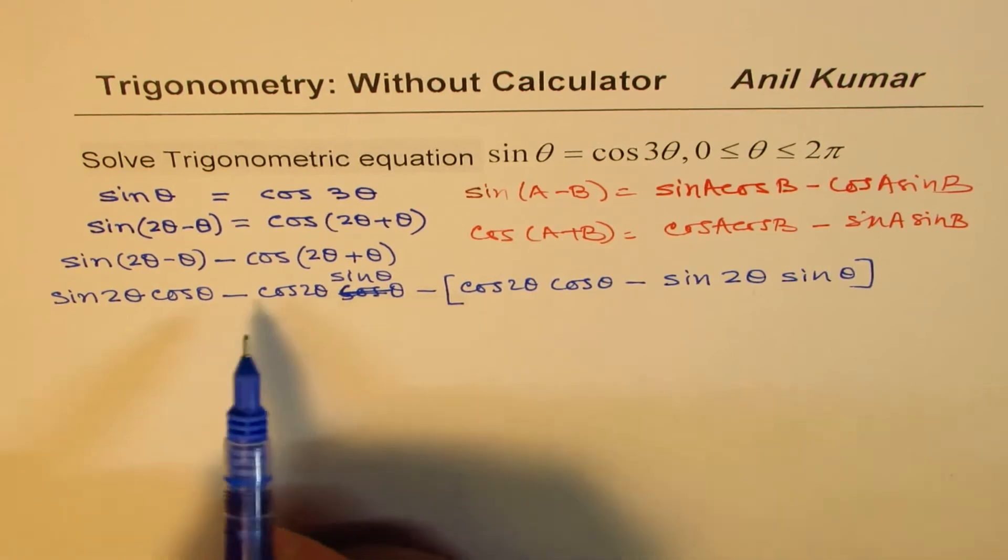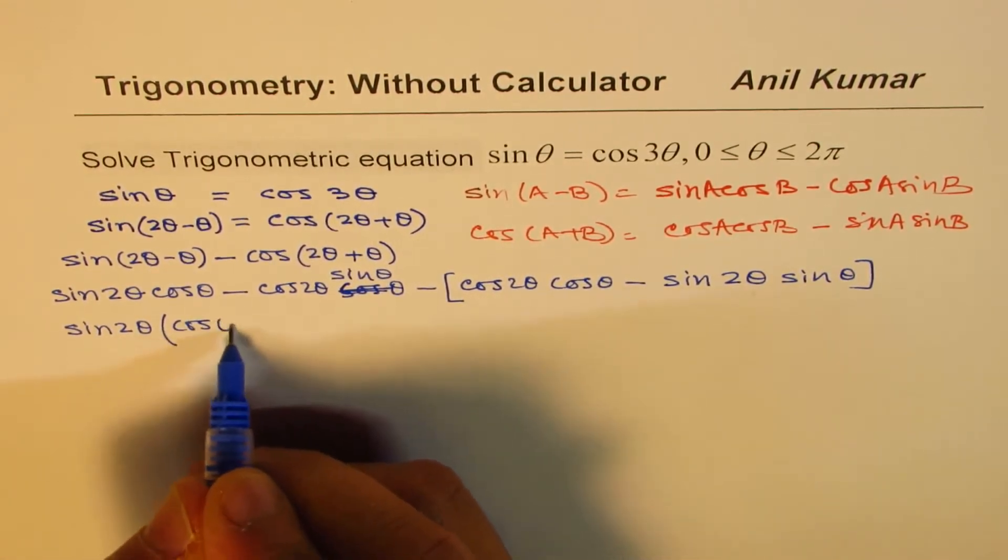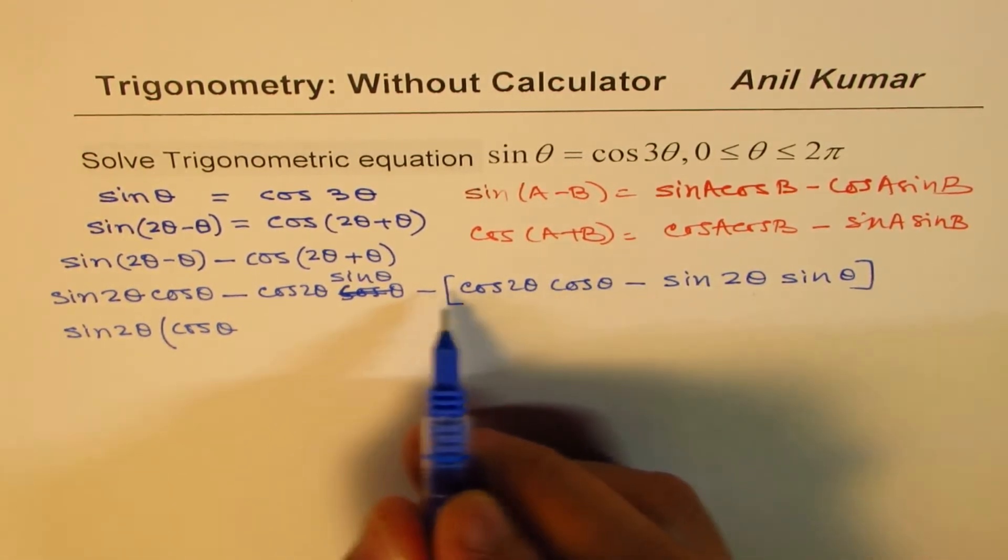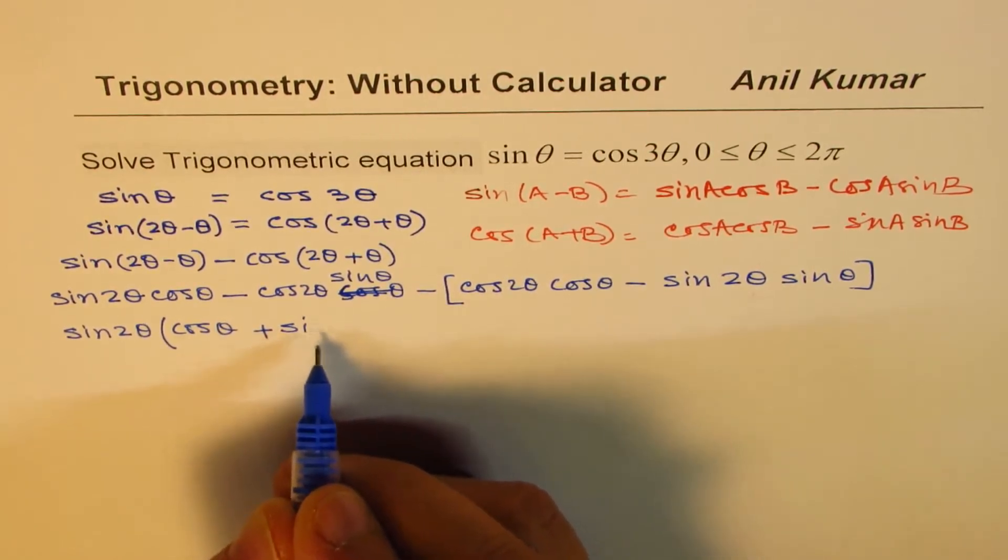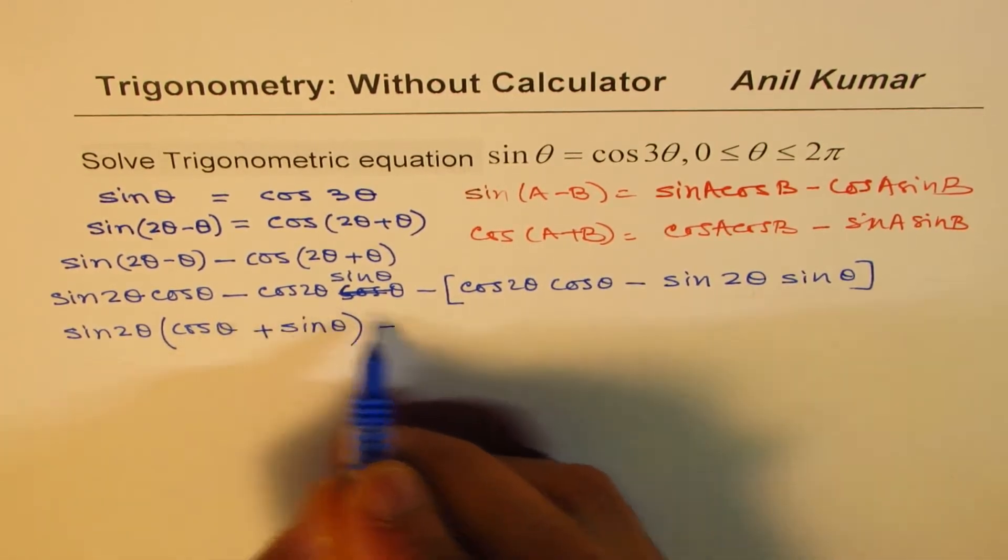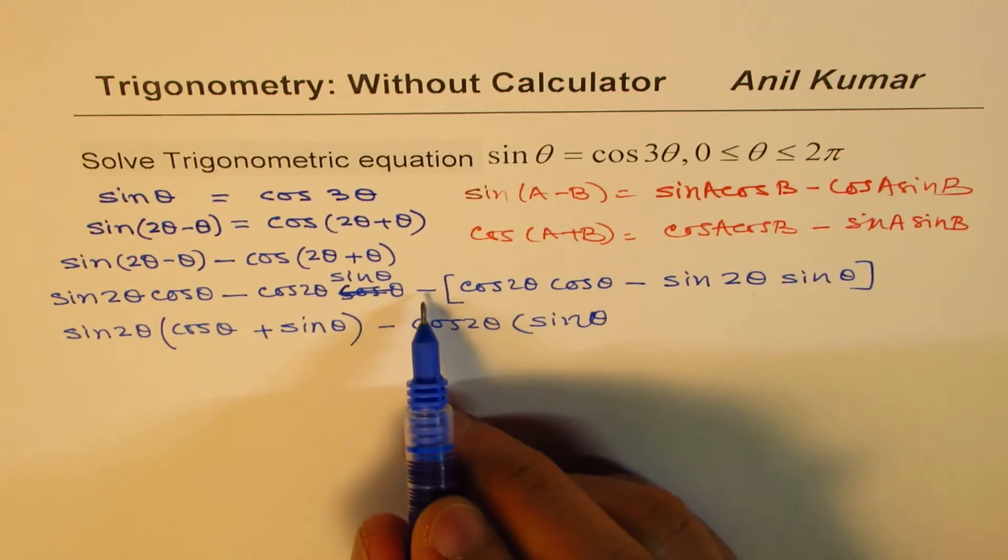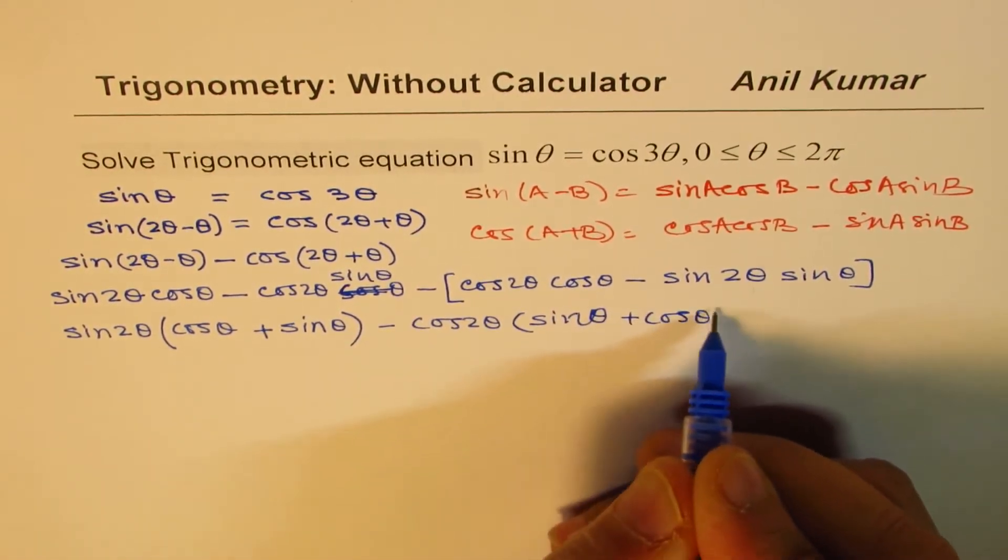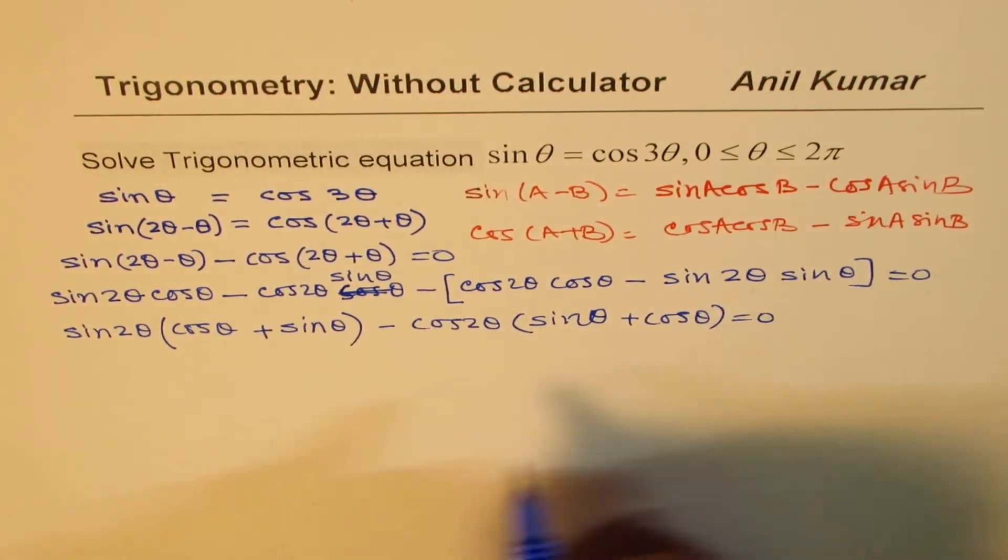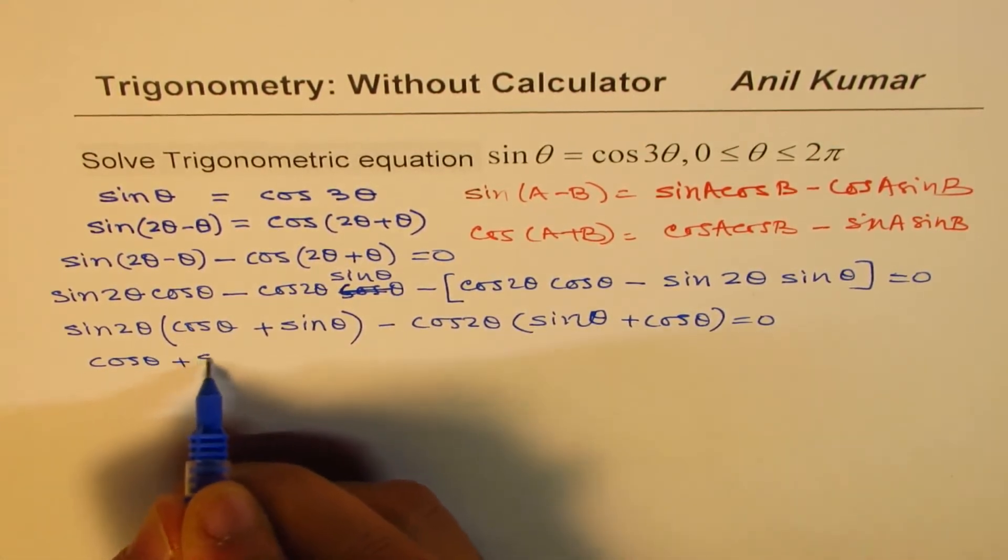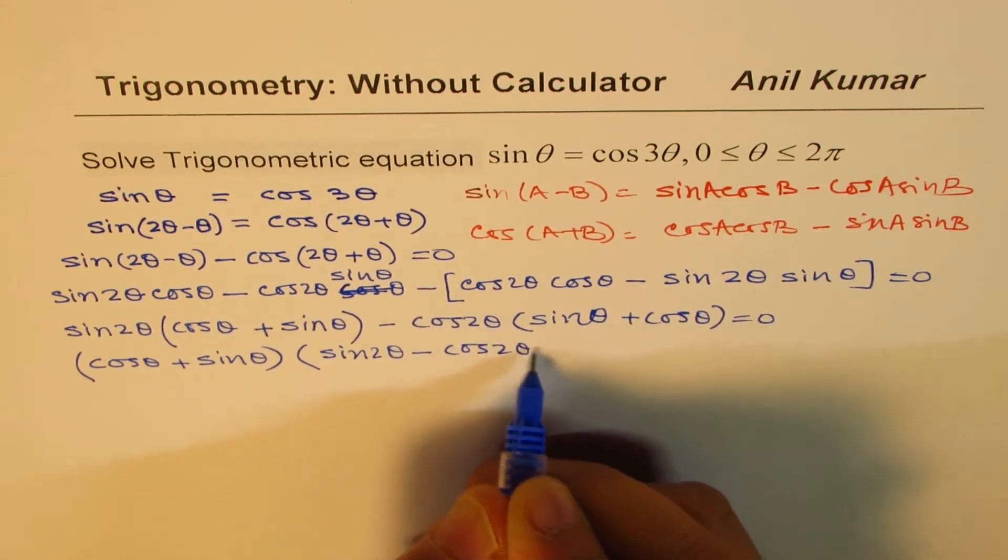So let's look into common terms. With sine 2 theta, I can take cos theta common, and here we have minus sine theta, so minus and minus becomes plus sine theta. And with minus cos 2 theta, I can take sine theta common. With cos 2 theta, this is minus, and we have taken minus outside, so that becomes plus cos theta. Now cos theta plus sine theta is common, and this is equal to 0.